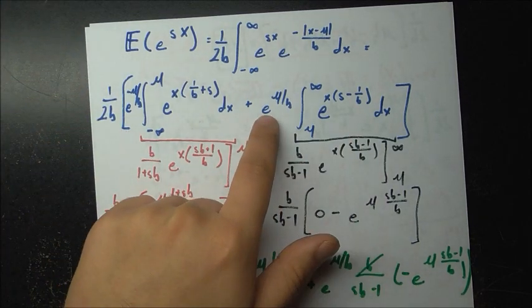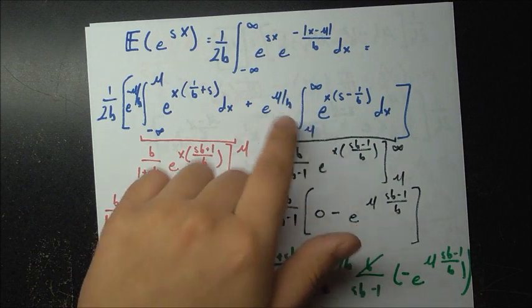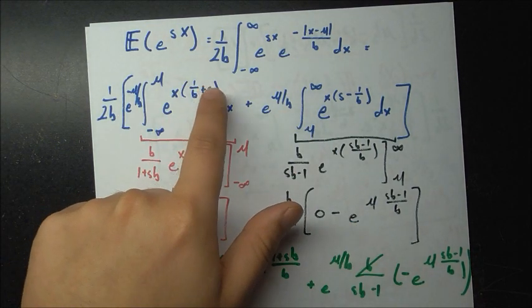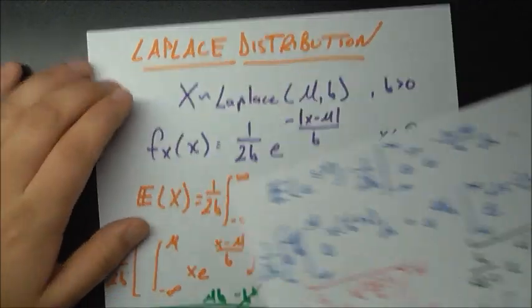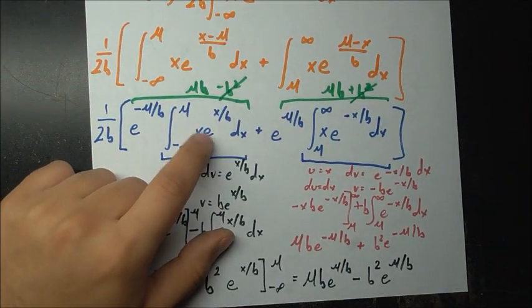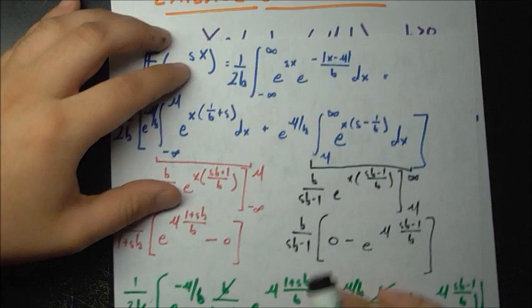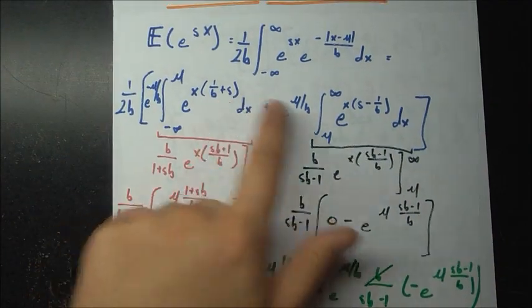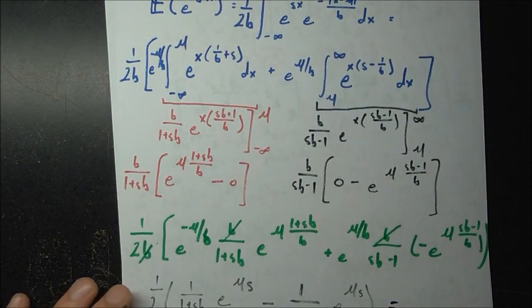Inside each integral, I combine the e to the sx with the remaining exponential from the PDF. Since they share x in the exponent, I combine them to get two different coefficients for x in the exponent of e, making the integrals cleaner to evaluate.